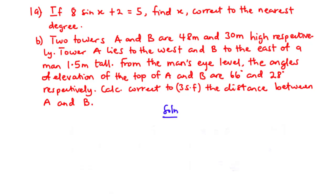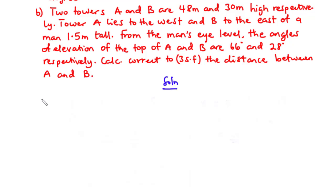For part b: two towers A and B are 48 meters and 30 meters high respectively. Tower A lies to the west and B to the east of a man 1.5 meters tall. From the man's eye level, the angles of elevation of the tops of A and B are 66 degrees and 28 degrees respectively. Calculate, correct to three significant figures, the distance between A and B.